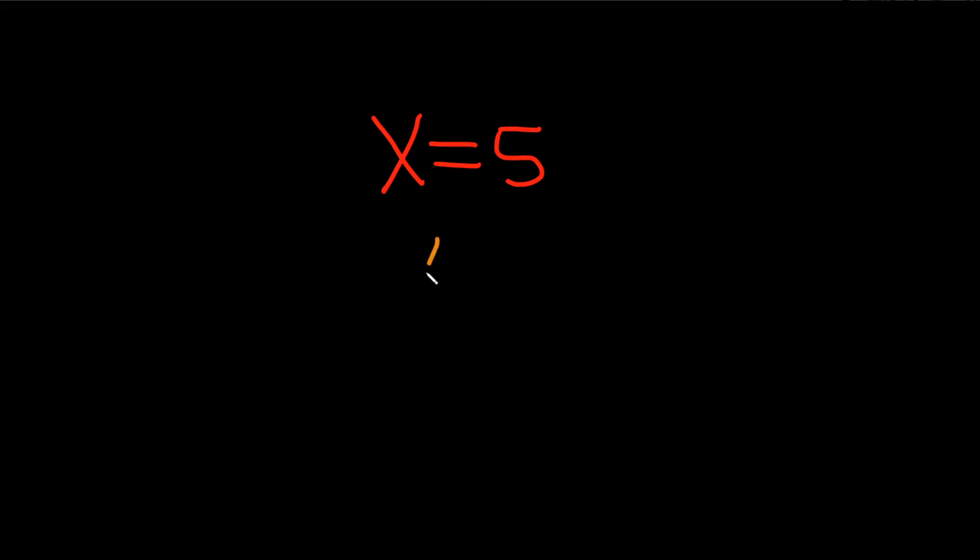And so the trick is, whenever you have an equation where it's x equals a number, it doesn't matter what number it is. If it's just a number by itself and there's an x here, this is always a vertical line. Always, no matter what. So this is always the equation of a vertical line.